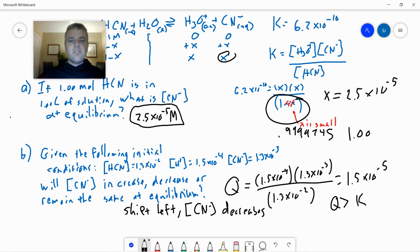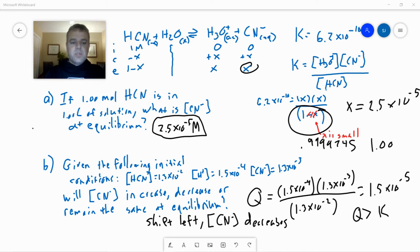So it will shift to the left and the concentration of cyanide will decrease as we approach equilibrium. So under these conditions, the reaction would actually shift to the left. I do want to point out real quick that in this problem, I used H plus down here instead of H3O plus. Those are really the same thing. Sorry if that caused any confusion there.